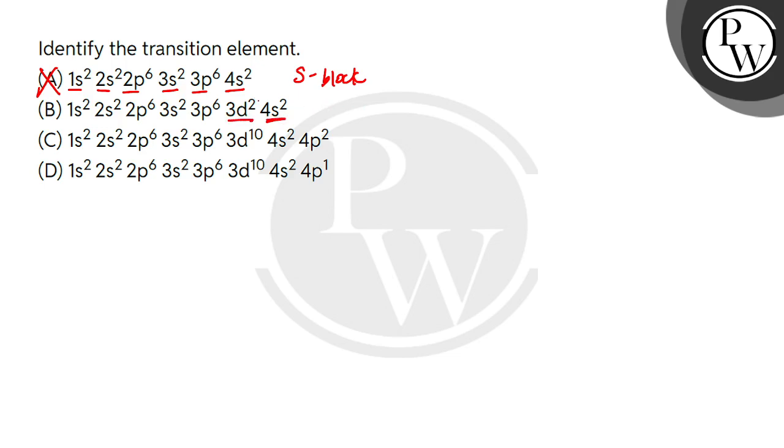then 3d² is filled. So, this is the valence electron. It is in 3d. So, this is a d-block element. And the 3d sub-shell is partially filled. So, what can we say?